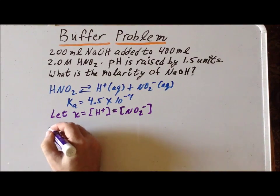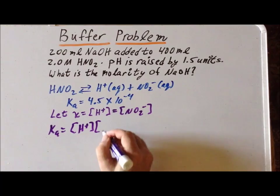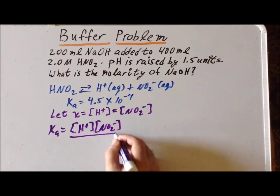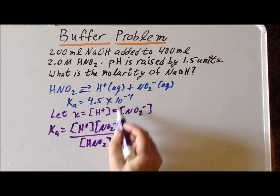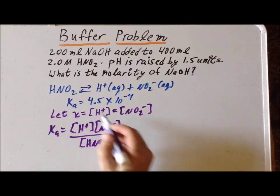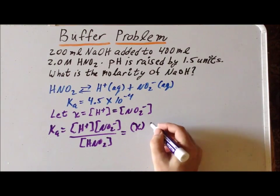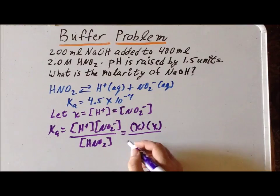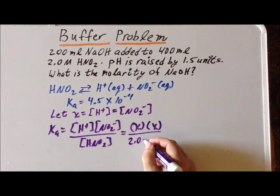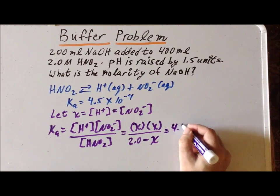Now we can write out the equilibrium constant expression for this reaction. It's going to be [H⁺] times the concentration of nitrite divided by the concentration of undissociated nitrous acid, and we know this equals 4.5 × 10⁻⁴. Substituting our values for X, we replace H⁺ by X and nitrite by X. The amount of undissociated nitrous acid is equal to the original concentration, 2.0 molar, minus the amount that dissociates, giving 2.0 − X. This equals 4.5 × 10⁻⁴.